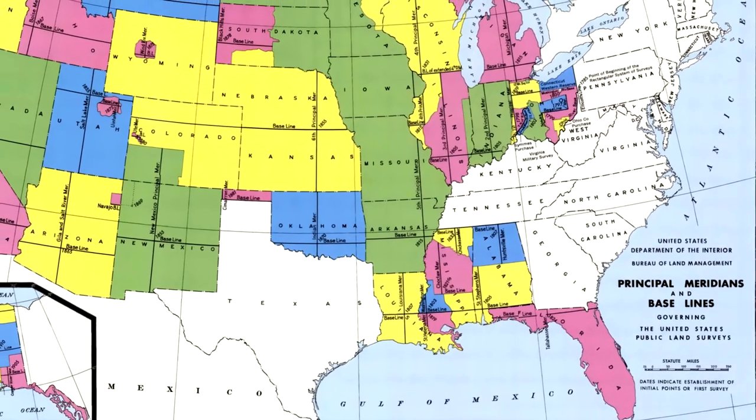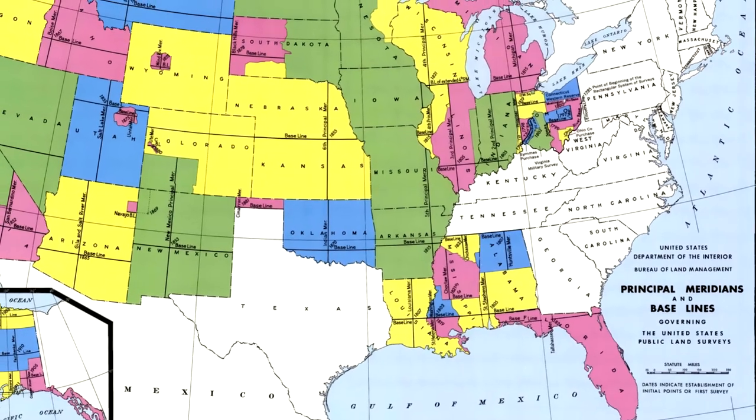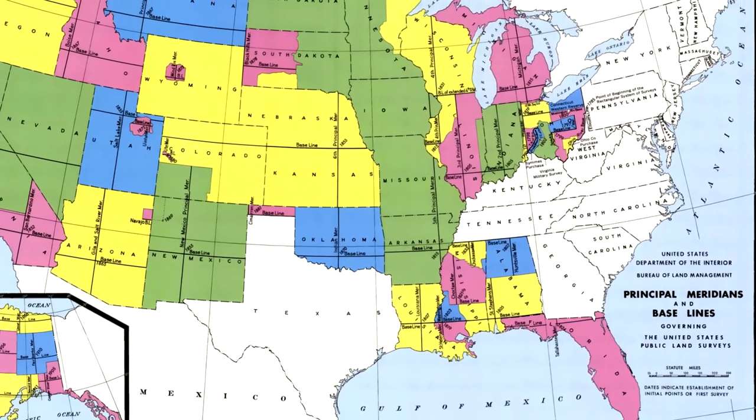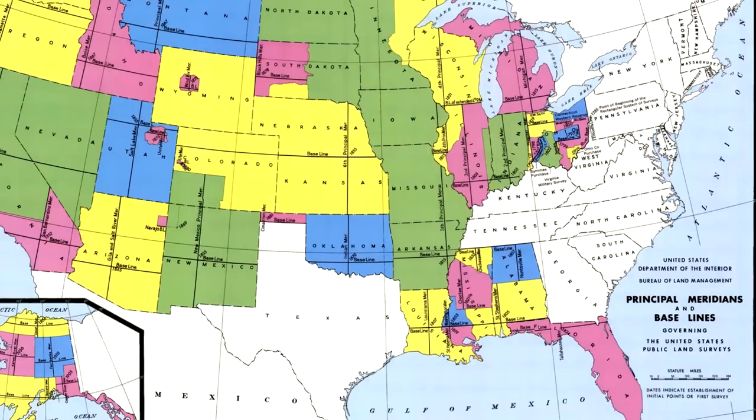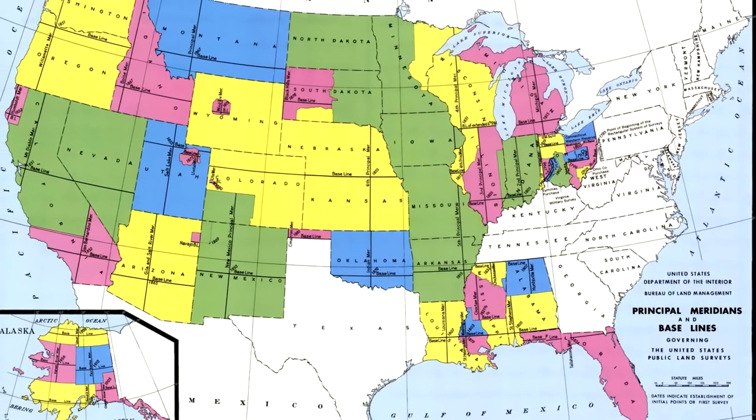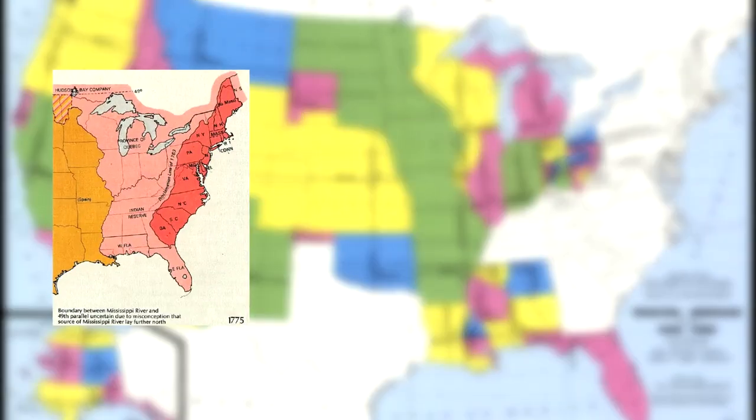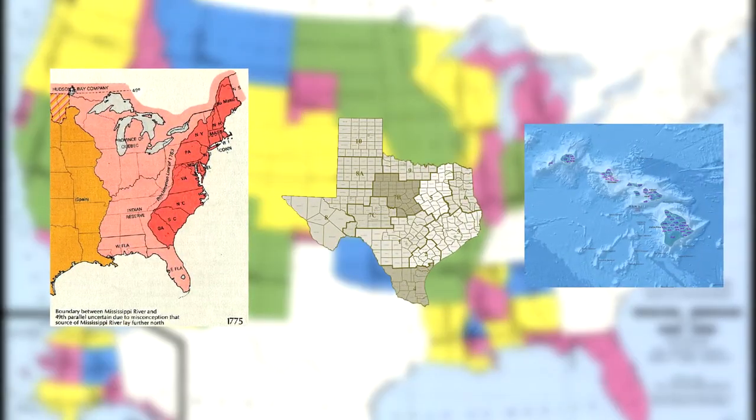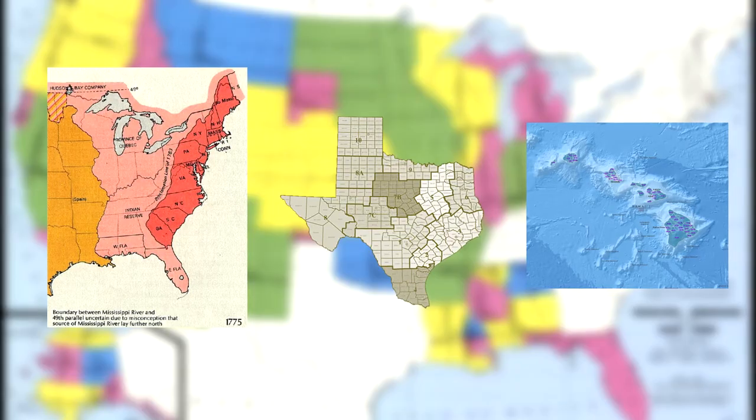Though not popularized until 1862, the PLSS is still used as the primary means for legal definition of property in the U.S. Most states use the PLSS, with exception to much of the Eastern Seaboard, including the 13 original colonies, Texas and Hawaii. The majority of these exceptions are rooted in their history.